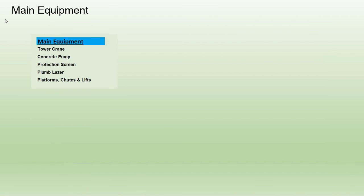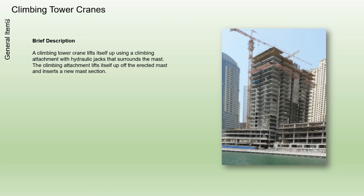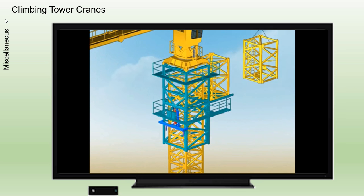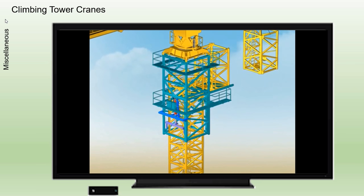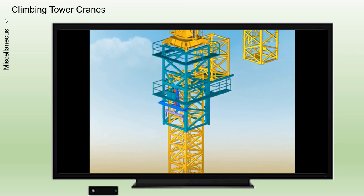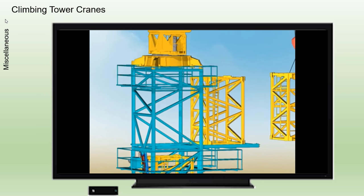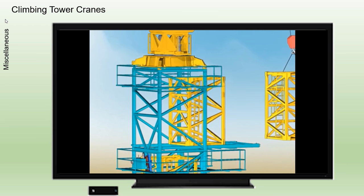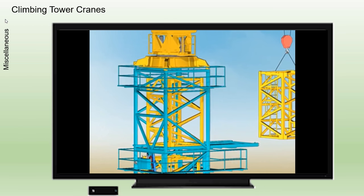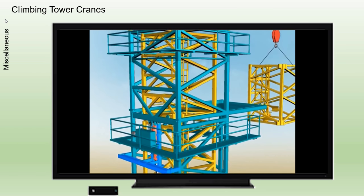Main Construction Equipment and Plant — Tower Cranes. A climbing tower crane lifts itself up using a climbing attachment with hydraulic jacks that surrounds the mast. The climbing attachment lifts itself and the top of the crane up, off the erected mast, and inserts a new mast section. Above a certain height, the crane mast is anchored to the building using tie collars.